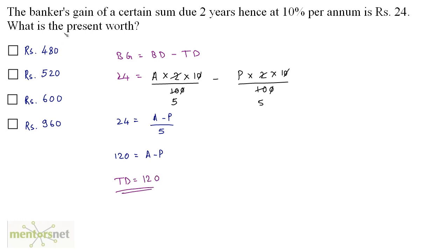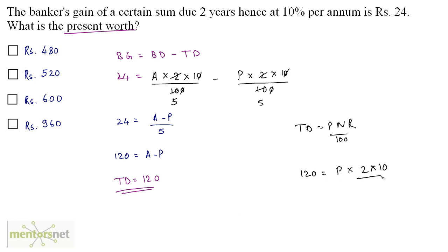A minus P is amount minus present worth, which is actually the interest — the true discount. So true discount equals 120. Now we need the present worth. The formula for true discount is P × N × R / 100. So 120 equals P × 2 × 10 / 100. Solving, the present worth is 60 × 10, which is Rs. 600. So option C is the correct answer.